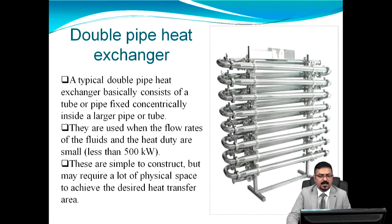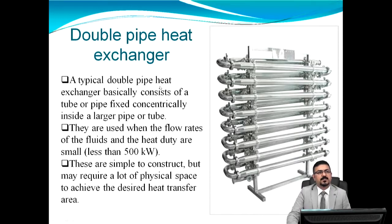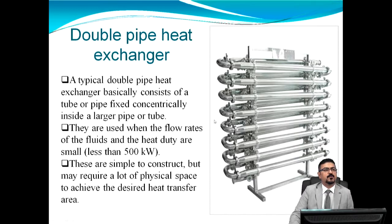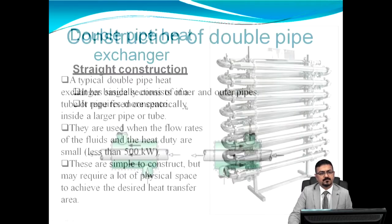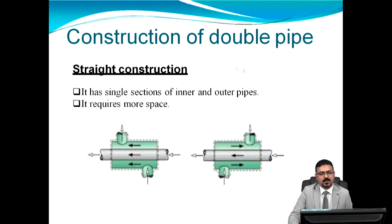A double pipe heat exchanger basically consists of a tube or pipe fixed concentrically inside a larger pipe or tube. In straight construction, it has single sections of inner and outer pipes and requires considerable floor space.